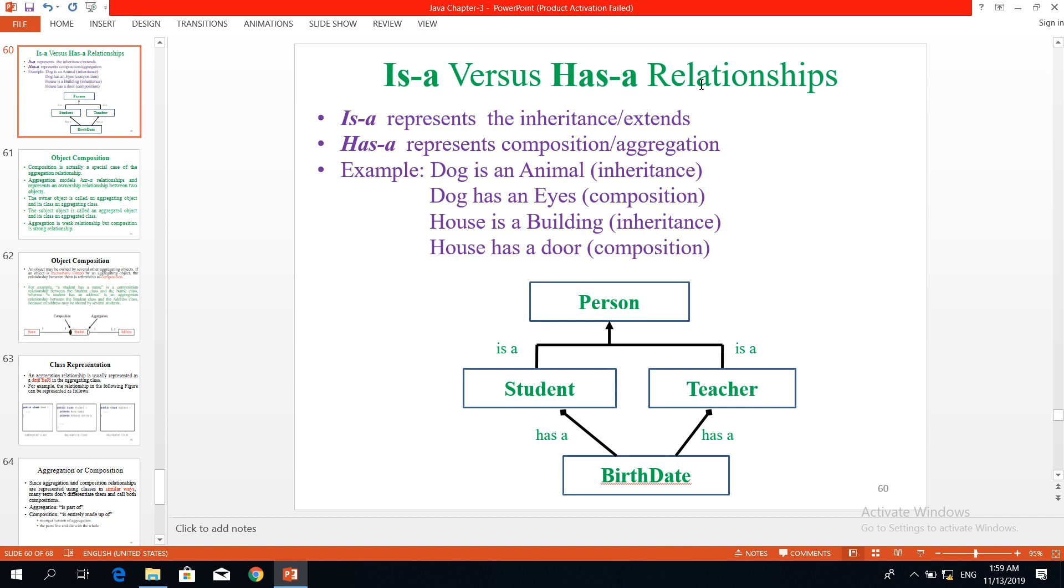we have the composition and aggregation. Composition represents, is-a represents the inheritance or extends. Inheritance - a subclass will extend superclass. Is-a represents inheritance. Has-a represents composition or aggregation. Composition and aggregation. Has-a relationship. For example, dog is an animal. Student is a person, teacher is a person. This is inheritance. Teacher is a person, a student is a person.